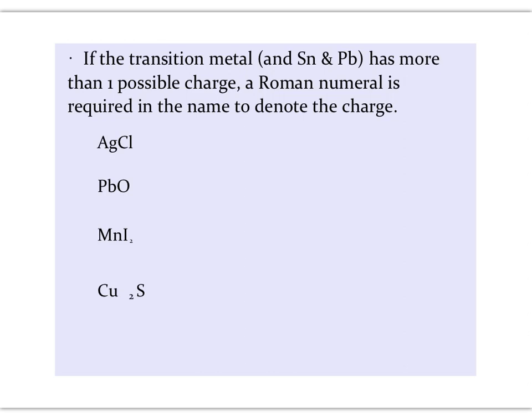This is probably the trickiest part of binary ionic compounds, determining the name, determining the Roman numeral of the transition metal or tin or lead. You have silver chloride. Silver is a transition metal, but it has only one possible charge, so you do not have to put a Roman numeral. So that one is just silver chloride.